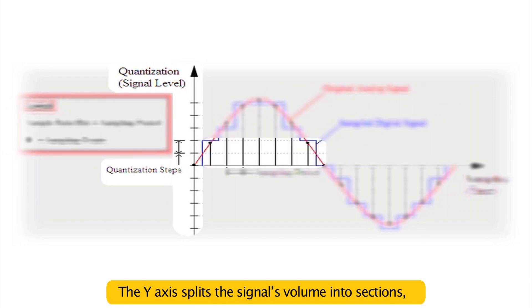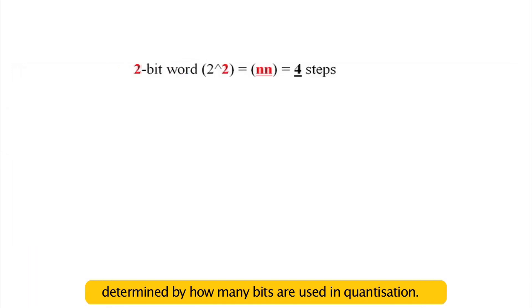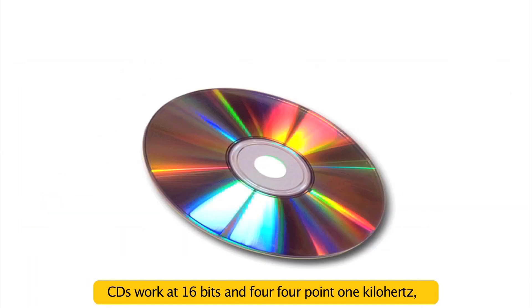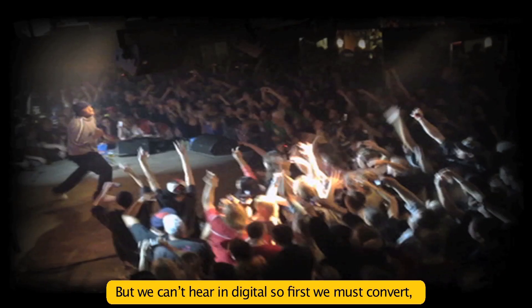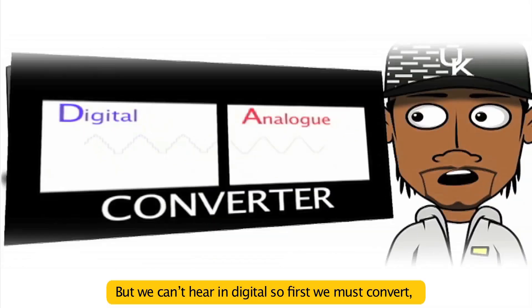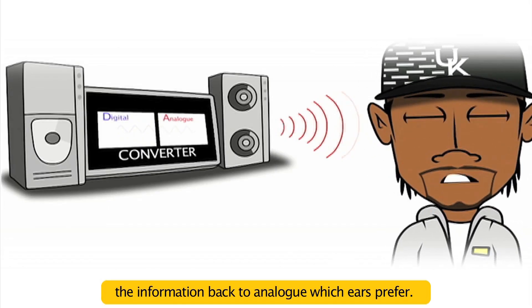Check the legends, the white axis bits. The signal's volume intersections are determined by how many bits are used in quantization. CDs work at 16 bits and 44.1 kHz, storing sounds from computers or even concerts. But we can't hear in digital, so first we must convert the information back to analogue, which ears prefer.